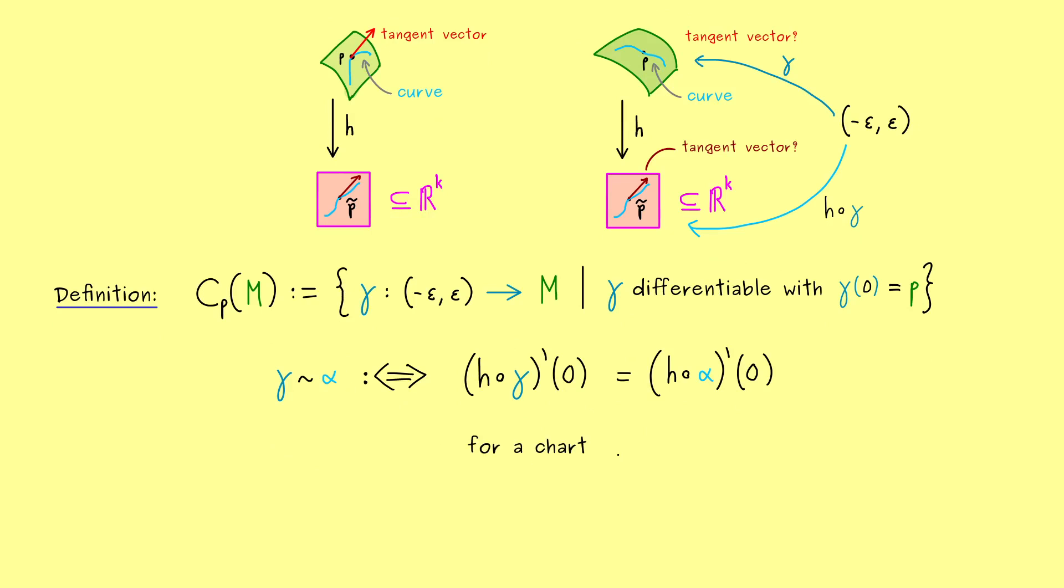So for a precise definition, we would say that gamma and alpha are equivalent to each other. Hence we see, this new equivalent relation is defined with the right hand side. So if the derivatives are the same on the lower level, we call the two curves equivalent. And here please note, it does not matter for which chart you check that. So you just have to check that for one chart (U, h).